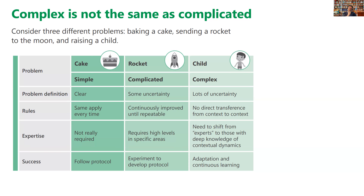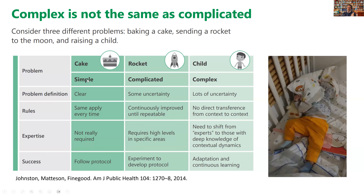Implementation is a complex problem, which means we have to approach it differently from baking a cake — which is simple, you follow the recipe — or building a rocket, which is complicated but eventually you develop a protocol you can follow every time. Implementation is not the same as that. You just don't know what you're going to find from one moment to the next. It's the same with implementation. So what can we do about this? How might we evolve our research?